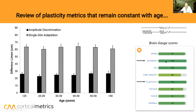When that number is small, your accuracy scores are good. Then we do a single-site adaptation study, where we deliver an illusory conditioning stimulus that makes the test stimulus feel smaller. When it feels smaller, it's harder to tell the difference, so this number gets bigger. When that number gets bigger, your plasticity score gets better — they go in opposite directions. Bigger number on the adaptation side means a better plasticity score.